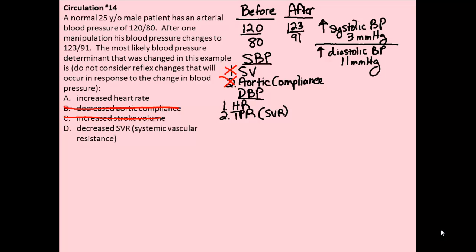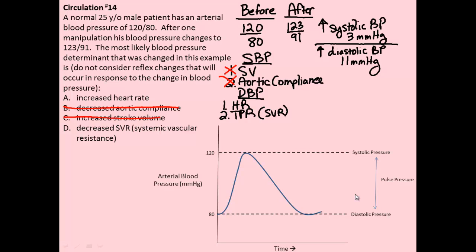We need to determine whether it was most likely an increased heart rate or a decrease in systemic vascular resistance that led to these effects. Let's look at our diagram from class showing the profile of arterial blood pressure, and think about what effect an increase in heart rate would have.